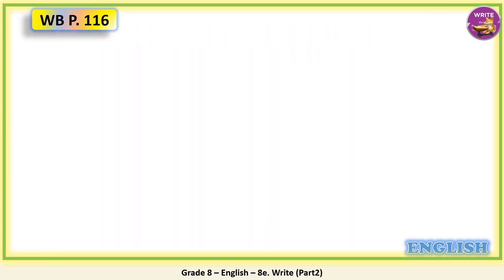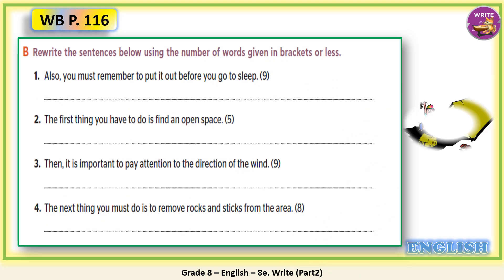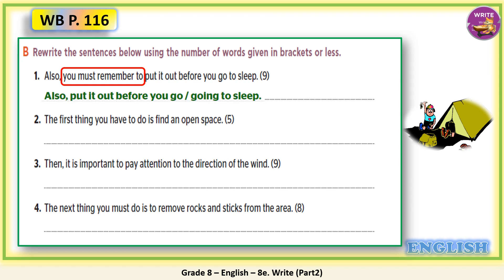Now, open your workbook page 116. Exercise B: rewrite the sentences below using the number of words given in brackets. One: 'Also, you must remember to put it out before you go to sleep.' Use just nine words to rewrite this sentence. We can remove 'you must remember to'. So we can say: Also, put it out before you go, or before going to sleep.